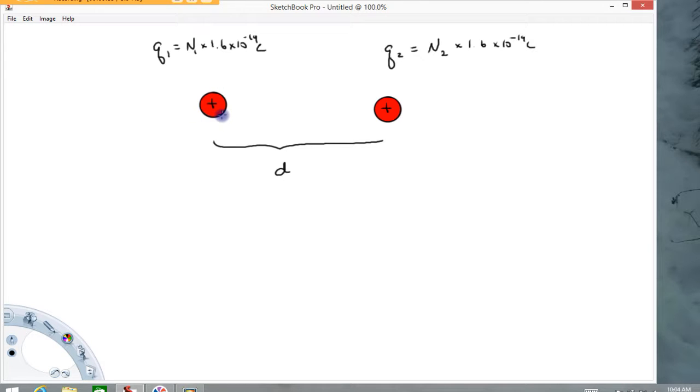So what could this be? Well, a proton is an example of a point charge. Or perhaps this is an atom that's missing some electrons so that it's ionized. And if we're a little ways from that, we can consider that a point charge.